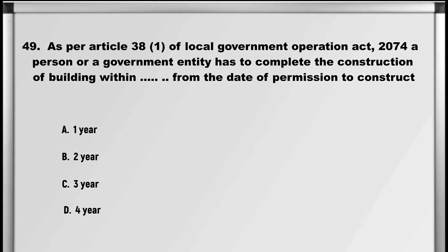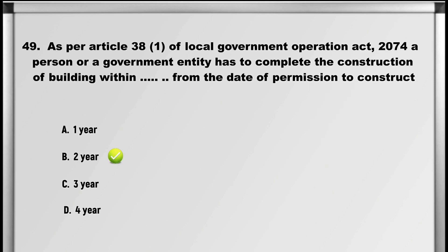Let's move on to question number 49: As per article 38(1) of the local government operation act 2074, a person or a government entity has to complete the construction of a building within how many years from the date of permission to construct? A. One year, B. Two years, C. Three years, D. Four years. Answer: B. Two years.